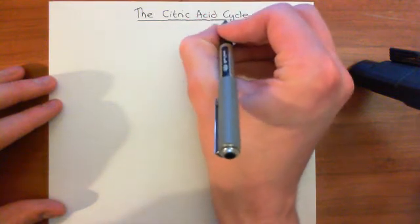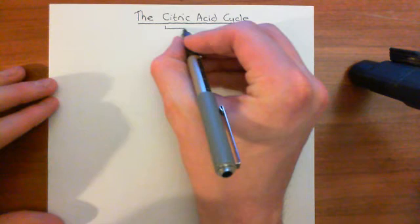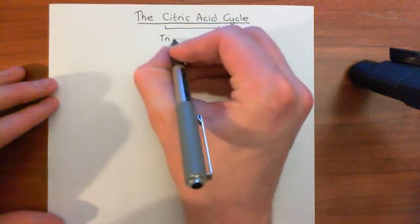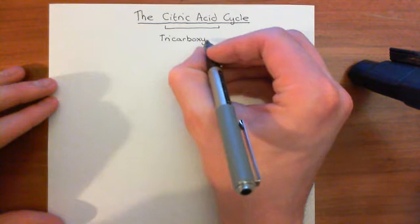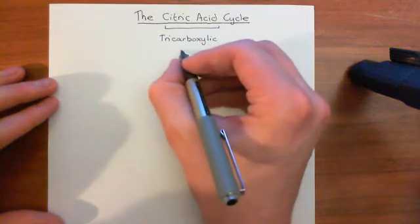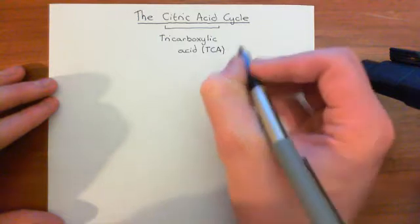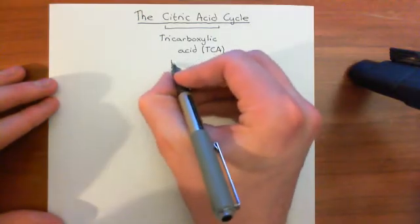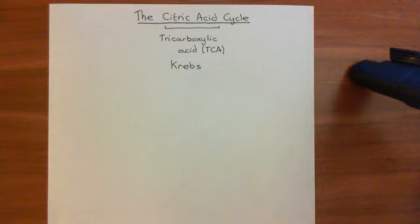The citric acid cycle has other names which are used. You will also hear it called the tricarboxylic acid cycle, abbreviated as the TCA cycle. It's also called the Krebs cycle, after Hans Krebs, who was instrumental in working this pathway out. So whatever you want to call it — the citric acid cycle, the tricarboxylic acid cycle, or the Krebs cycle — we're going to study it.